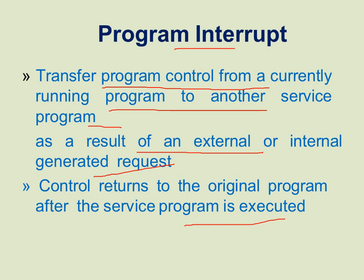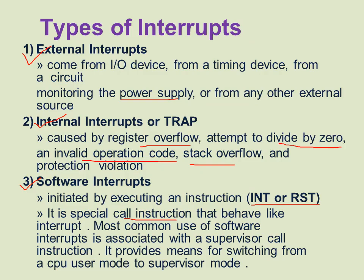Program interrupts transfer program control from a currently running program to another service program, as a result of an external or internal generated request. Control then returns to the original program. There are three types of interrupts: external interrupts (caused by input devices, timing devices, power supply problems) and internal interrupts (caused by overflow, invalid operation codes, or stack overflow).